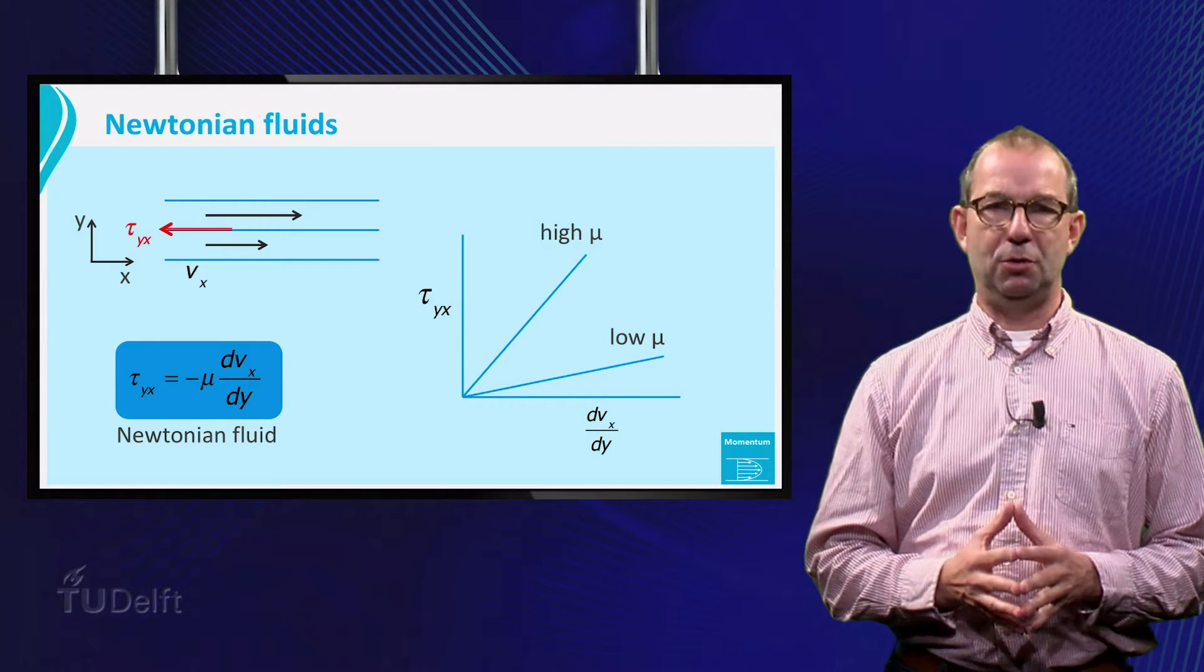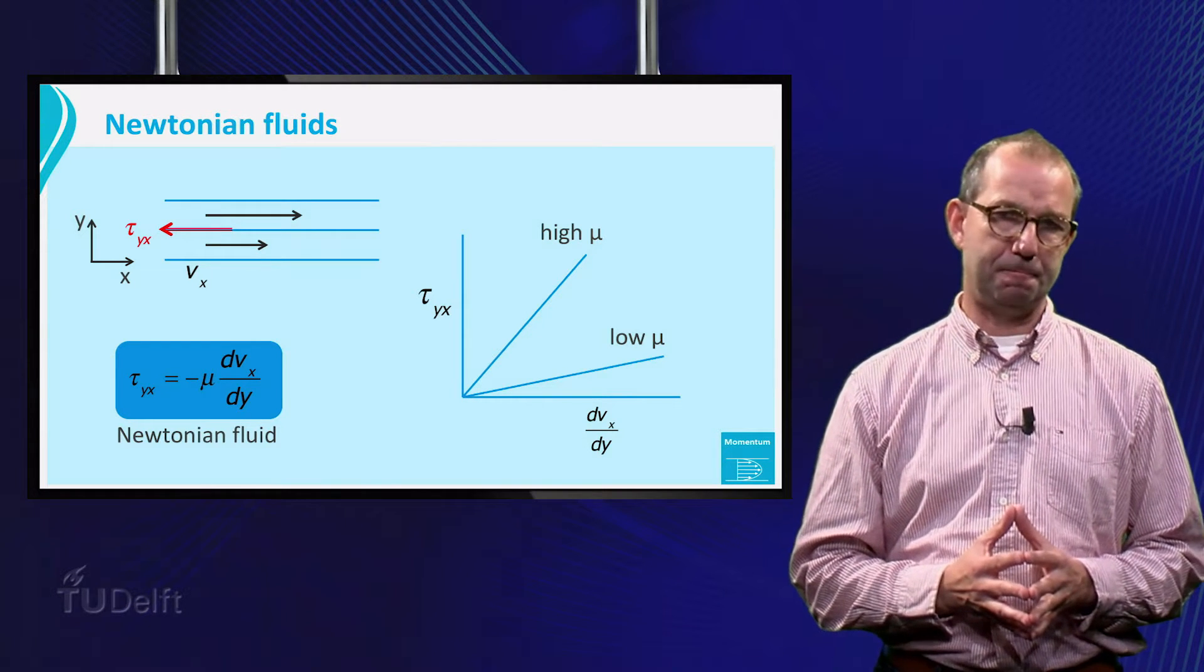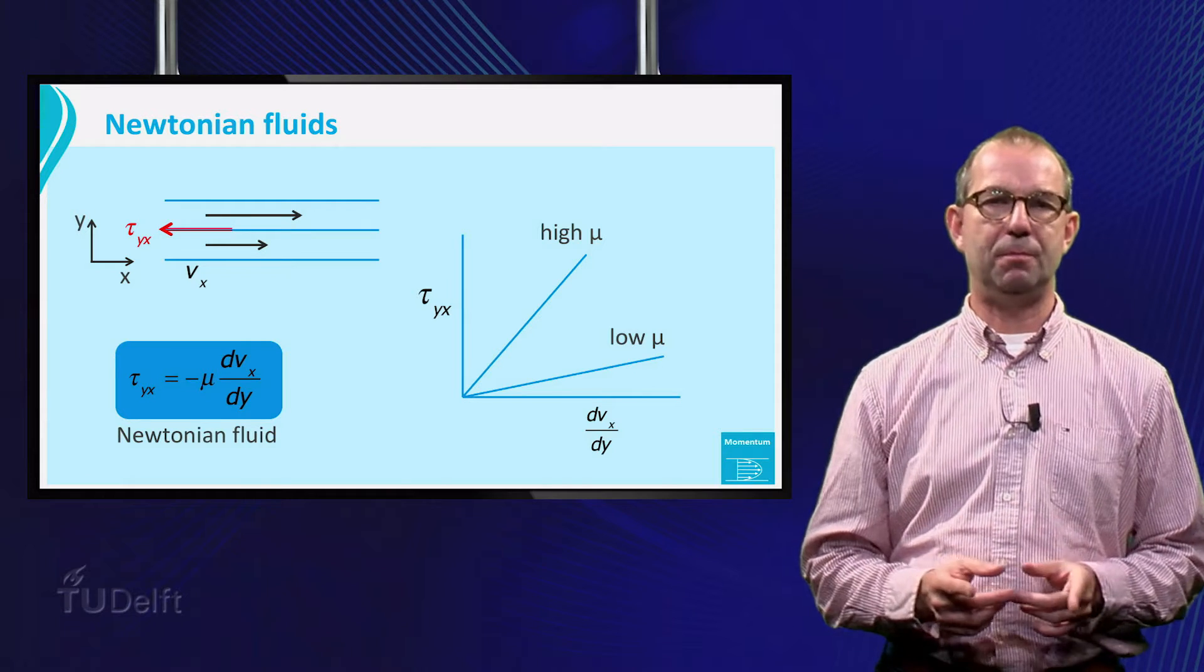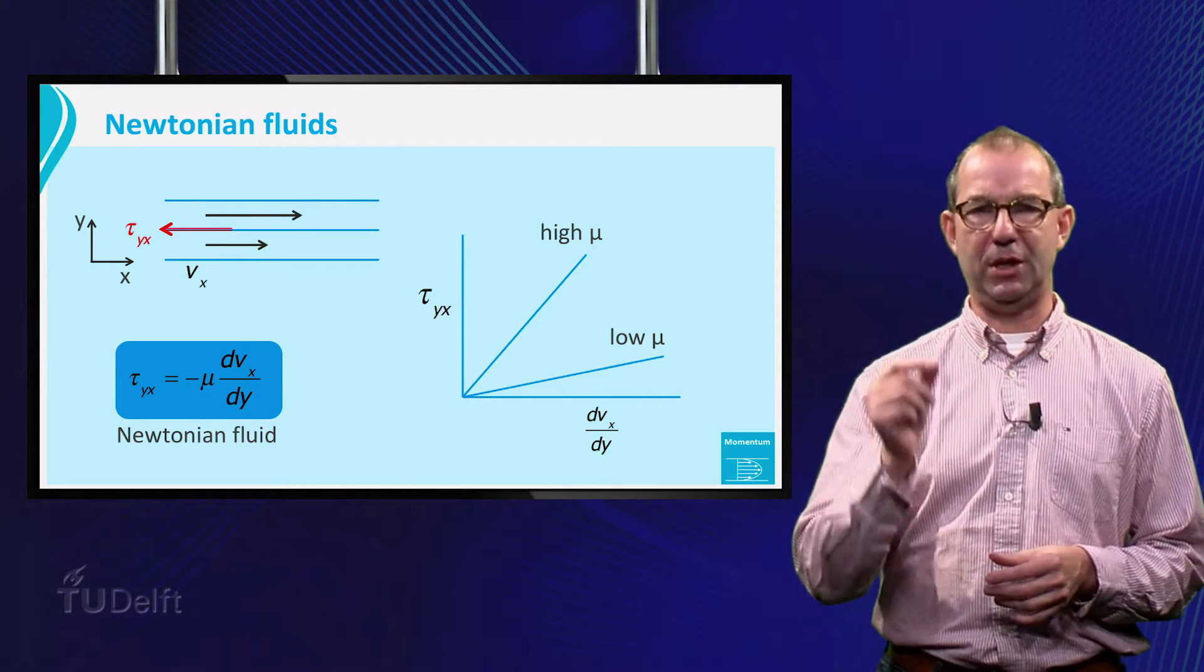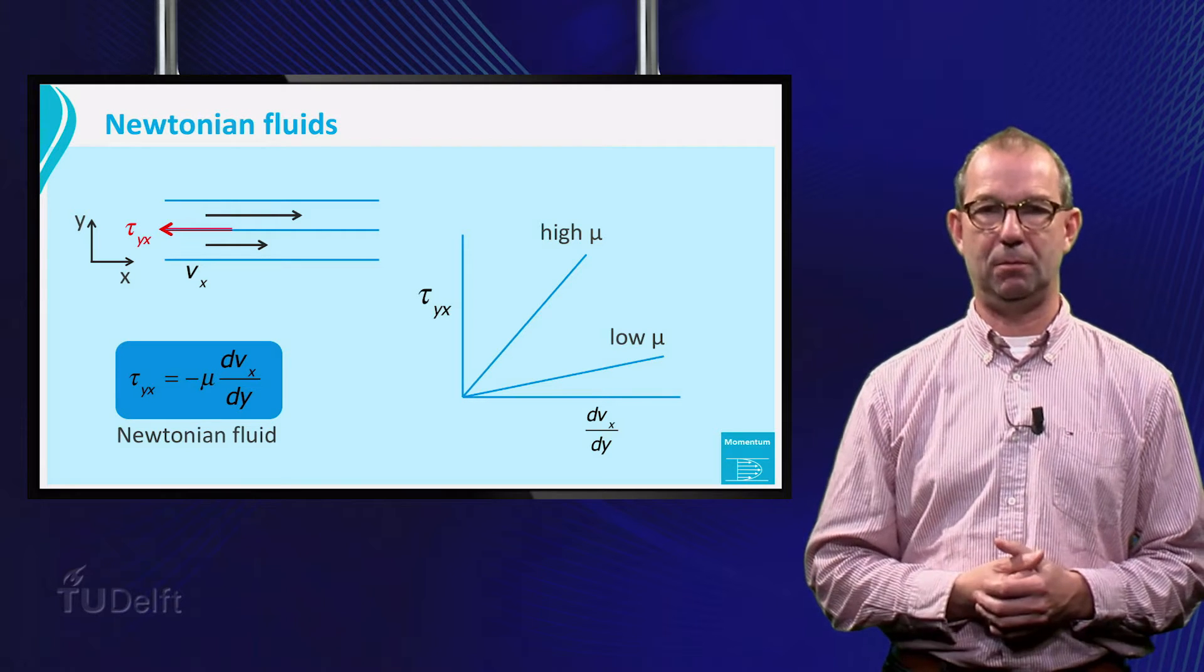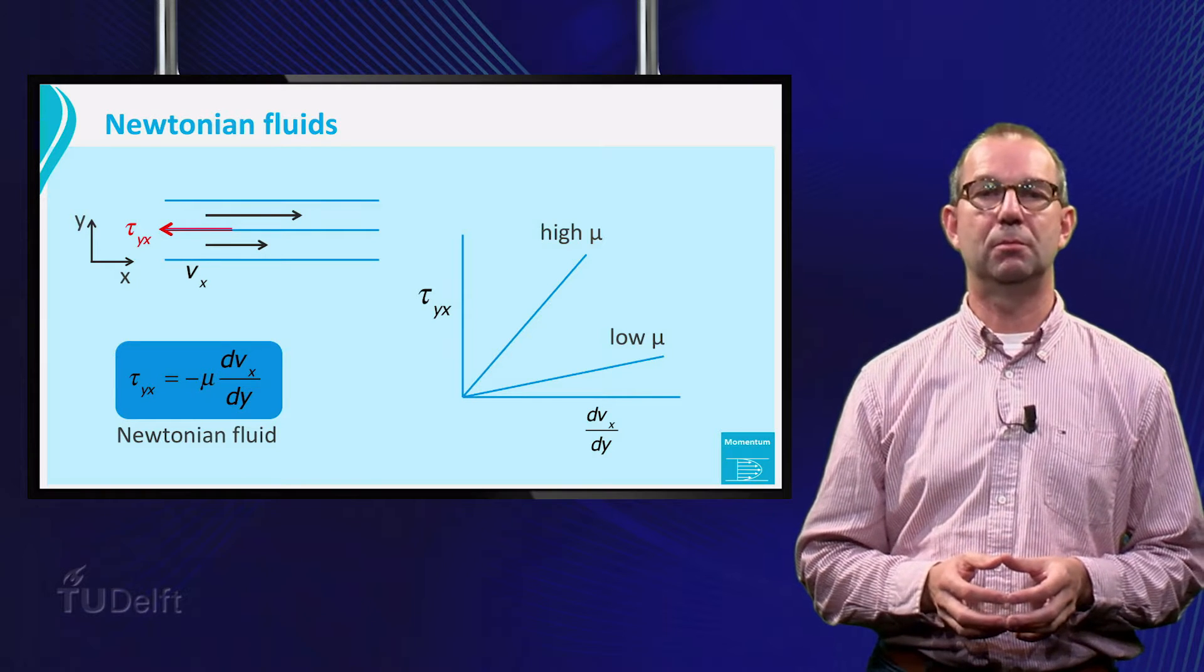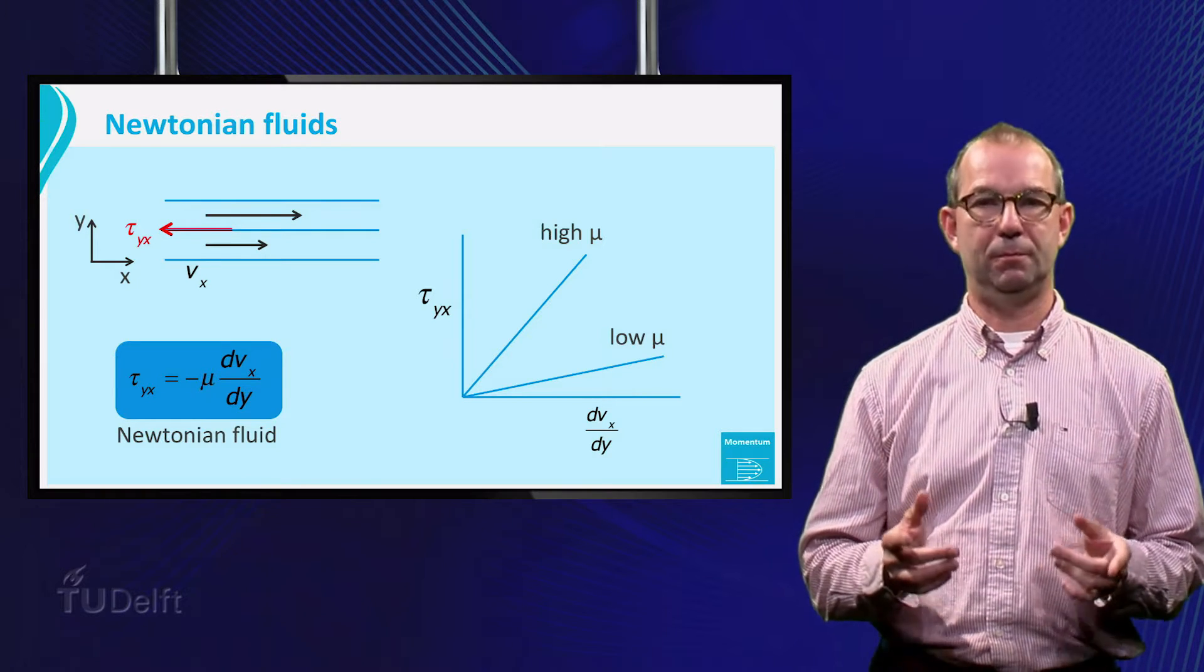A quick recap of what Newtonian Fluid is shown on the slide. The bottom line is that the shear stress, that is, the friction per unit area, is proportional to the velocity gradient. The proportionality constant is the viscosity mu. It is a property of the fluid, like the density.